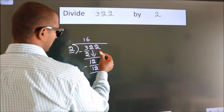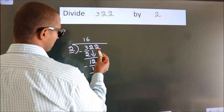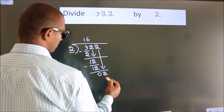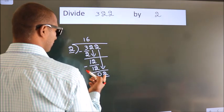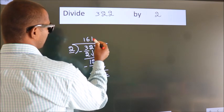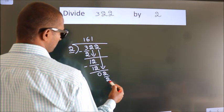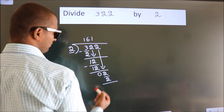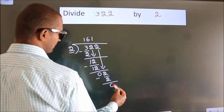After this, bring down the beside number. So, 2 down. So, 2. When do we get 2? In 2 table, 2 times 1 is 2. Now we subtract. We get 0.